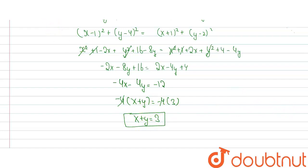As in this question we have to find the relation between x and y which is equidistant from two points which will be x plus y is equal to 3. So this is the condition and answer is solved.